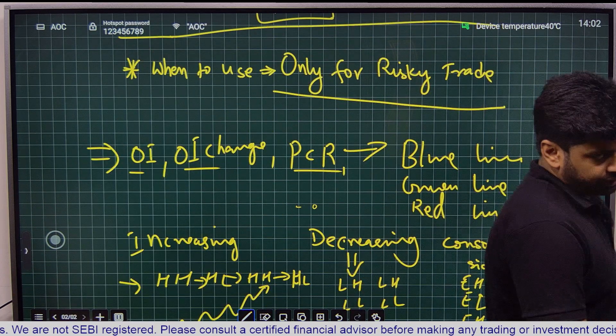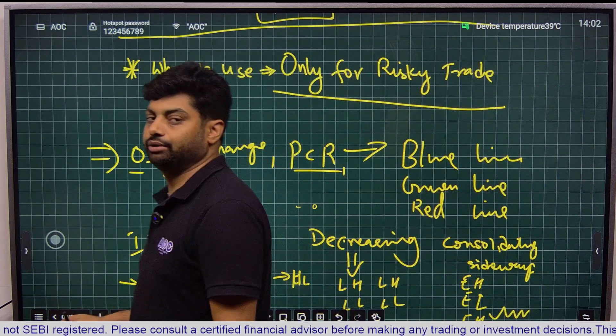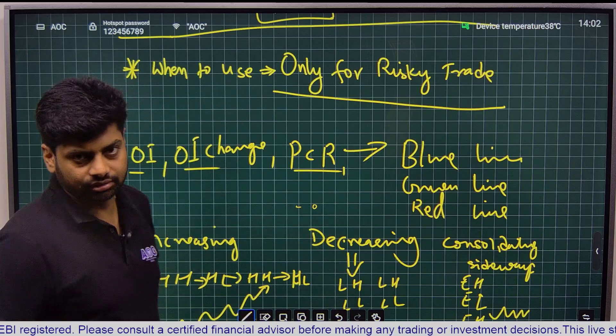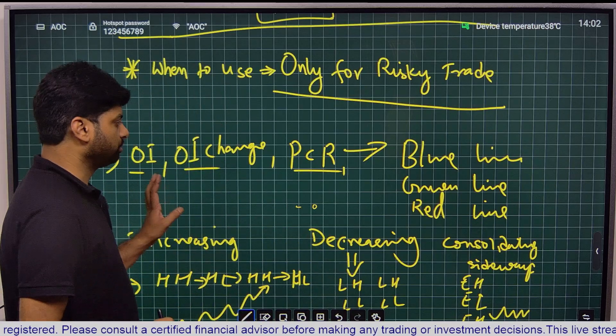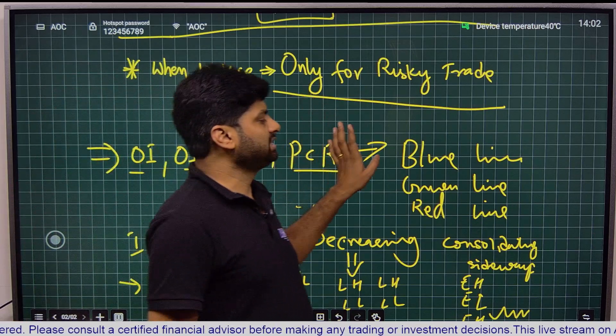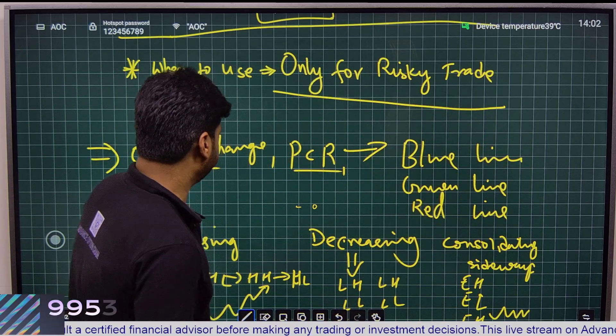Where do we find TOC? We will find TOC in OI, OI change graph, PCR, VOI, XOI, LTP change, and many more.